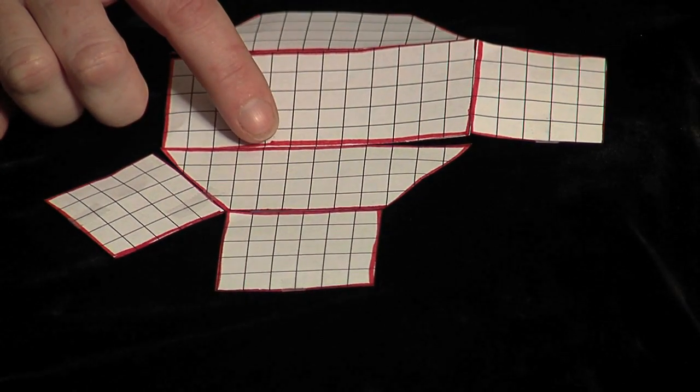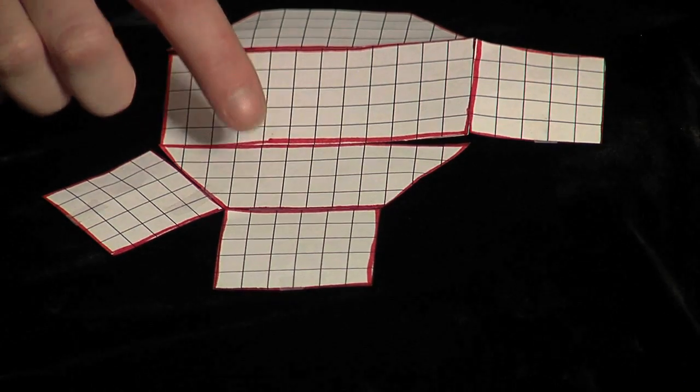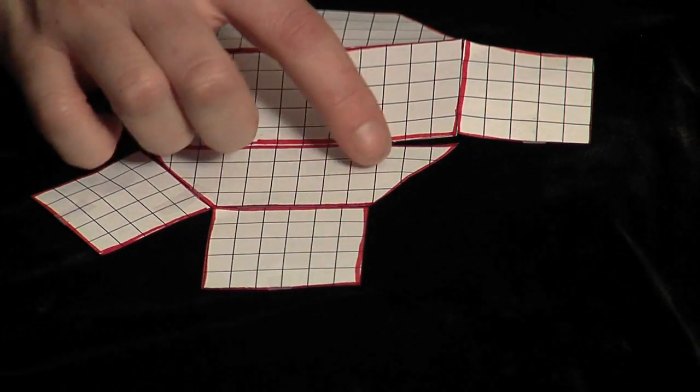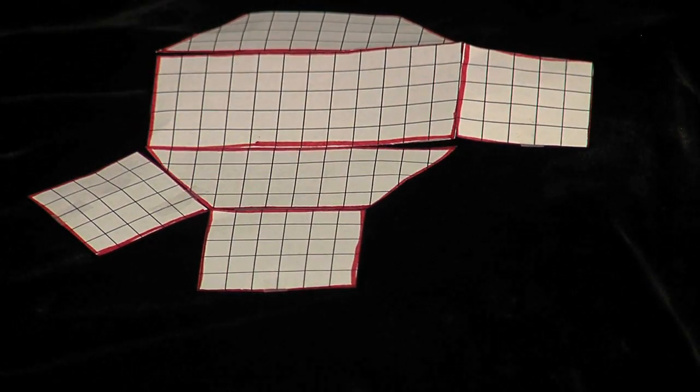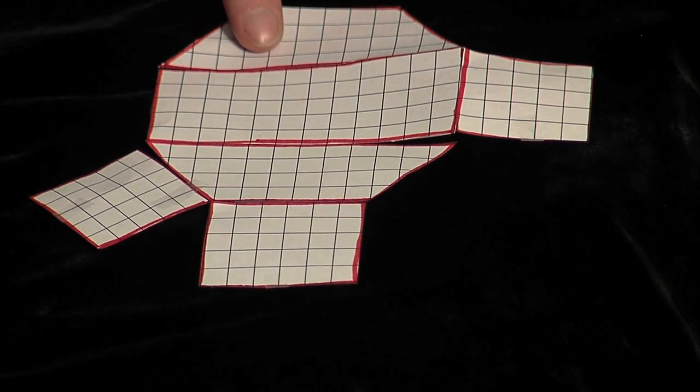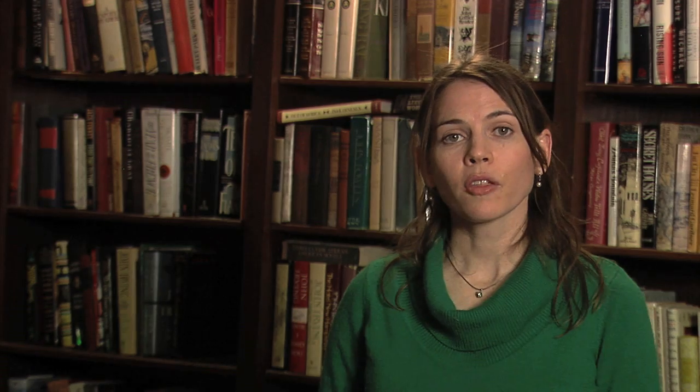If you add those together, you get 18. Cut that in half, that's 9. Times 4 is 36. The area of this trapezoid is 36, which means the area of this trapezoid is also 36.